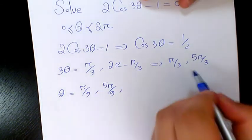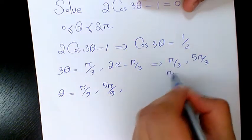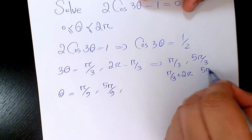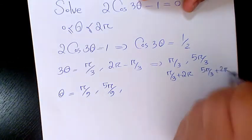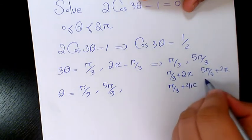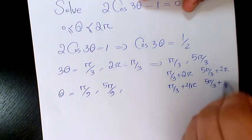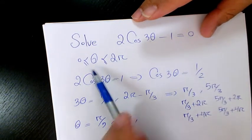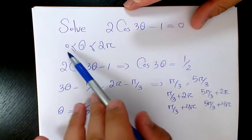Then in here we need to have π over 3 plus 2π, 5π over 3 plus 2π, π over 3 plus 4π, and 5π over 3 plus 4π. Why? Because we have 3 theta. When theta is between 0 and 2π, 3 theta is going to change from 0 to 6π, so we need to consider these four more answers.